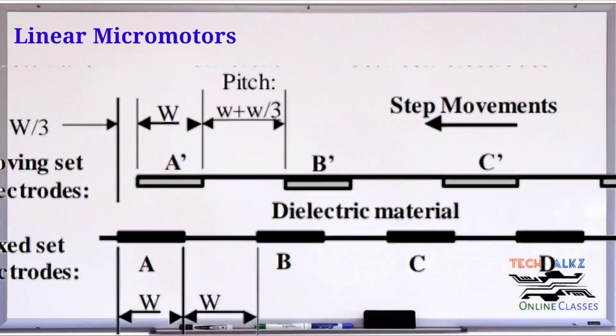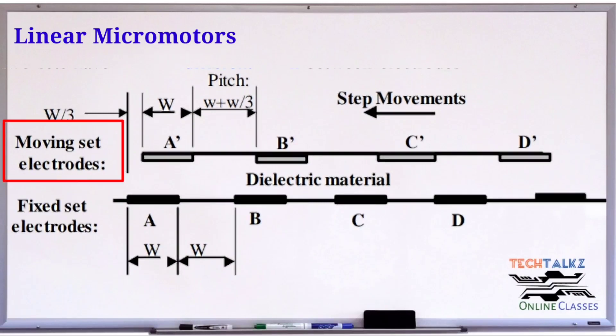Here is one thing: top electrodes are movable, a moving set of electrodes, while bottom electrodes are fixed. Now let's look at the working. The first set of electrodes I'm going to denote as A A-dash. Initially, this A A-dash is in misaligned condition, misaligned by a factor W by 3.